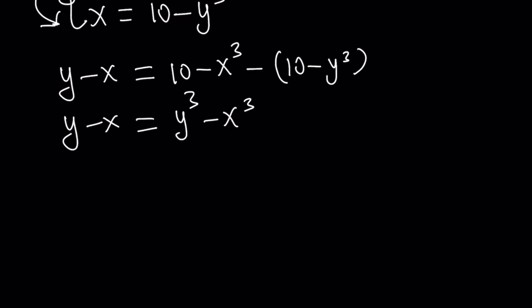Now, y cubed minus x cubed is factorable by difference of two cubes. Right? Let's go ahead and do it. Y minus x times y squared plus yx plus x squared. Now we can go ahead and cancel out the y minus x, but that's not going to be good.